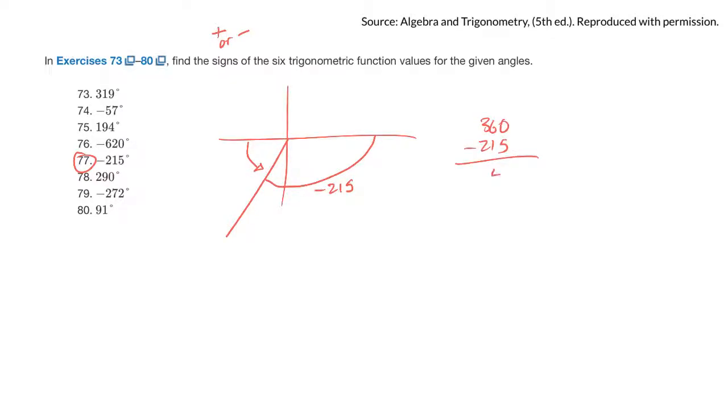It'd be 360 minus 215. So what's that? 145? So this angle here is 145 degrees. We probably didn't need to figure that out, but I know that the angle is in this quadrant. And all we want to know is what the signs are of those trig ratios.